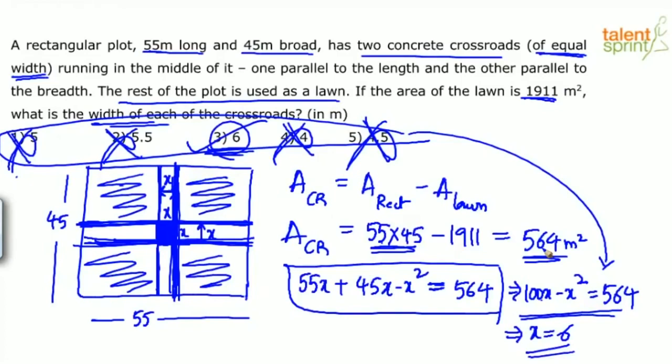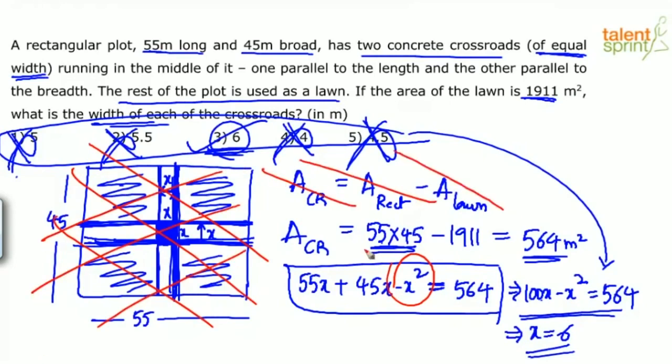Now I am sure many of us would go wrong in this step. You will not consider minus x square. So be careful about this. x square has to be subtracted. And then don't write all these unnecessary steps. First of all, I would say no need to draw the diagram. You can visualize that. So cut that part. Don't write this equation. Don't write any of these steps. The only step that you put on paper is area of the crossroad will be 55 into 45 which is 2475 minus 1911, and substitute the values. So it will take no more than 30-35 seconds.